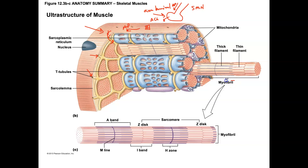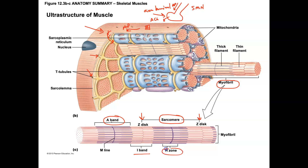Inside the muscle cells, you're going to find lots of myofibril structures, and those myofibril structures are actually the contractile structure within the muscle cell. If you take a look at the myofibril, you'll notice a structure called the sarcomere, which is delineated by Z-disc or Z-line to Z-line. There's a banding pattern to the sarcomere: we have I-bands, we have the A-band, and we have the H-zone. Sarcomeres are basically the protein arrangement within the myofibril, predominantly actin and myosin, and it's these proteins that are involved in muscle contraction.